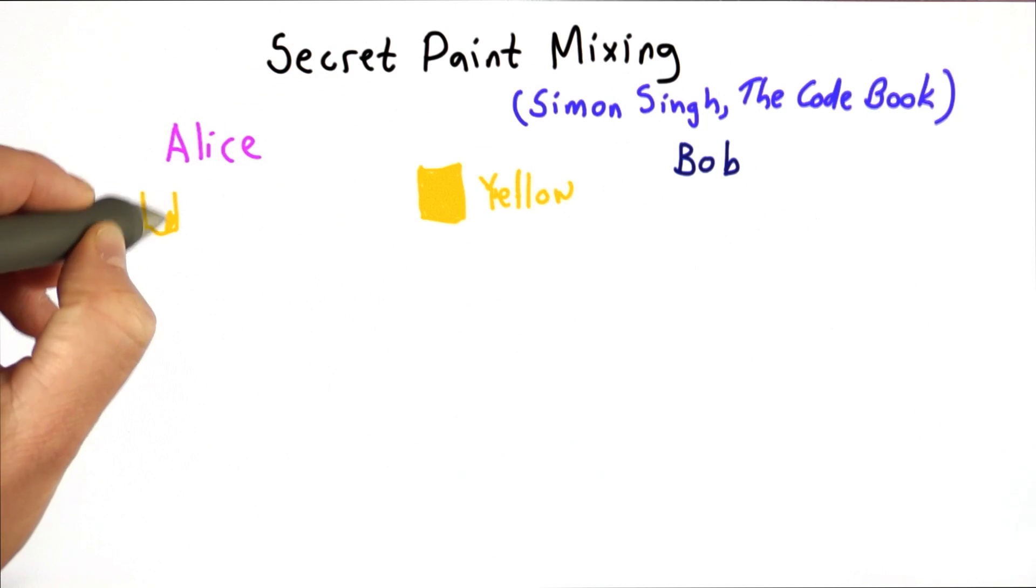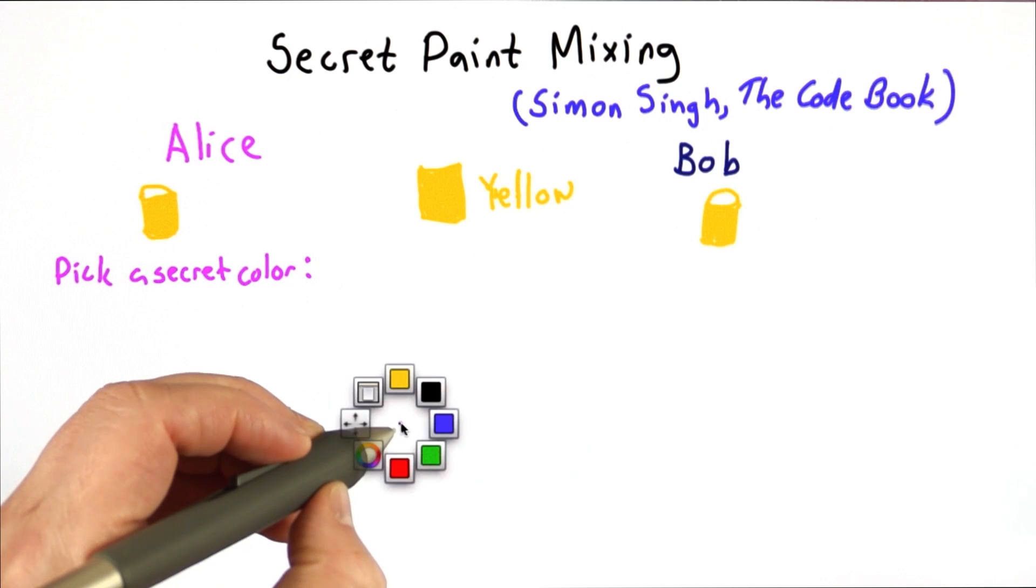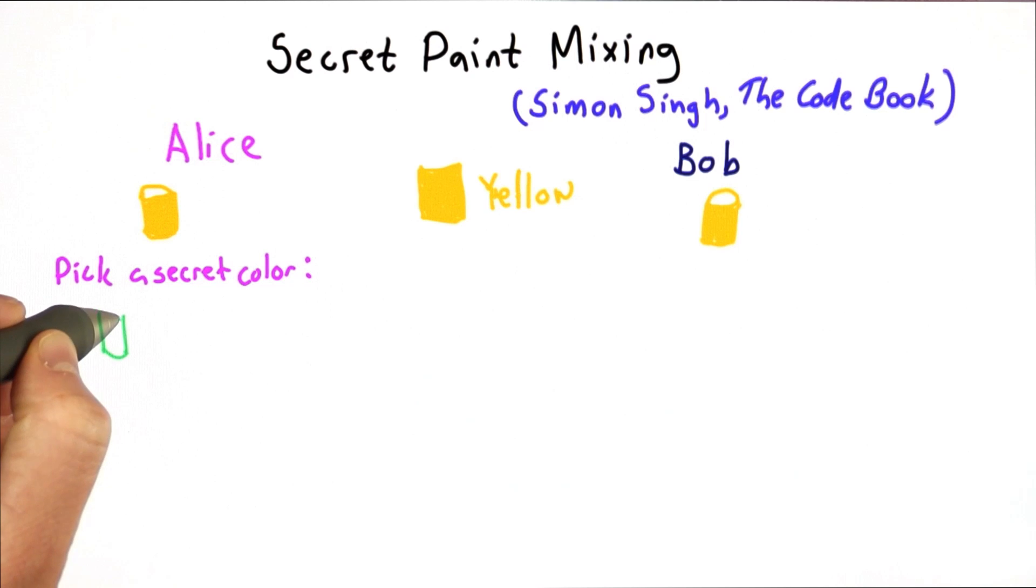Both Alice and Bob start with a can of yellow paint. Then each party will pick their own secret color. Let's say Alice picks a greenish color and Bob picks a purplish color.